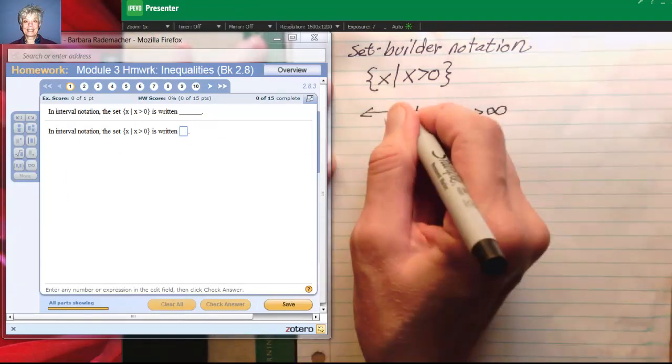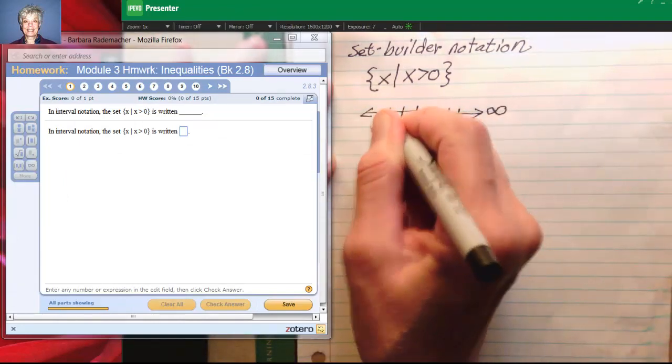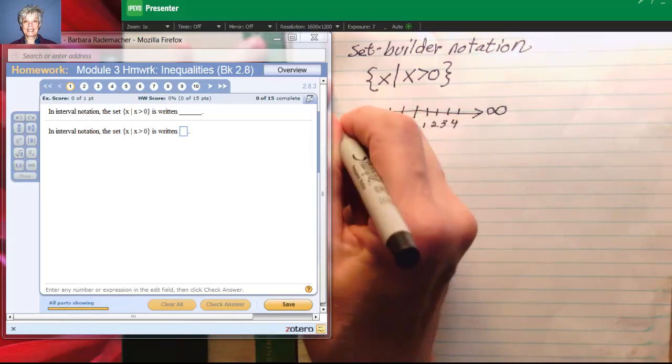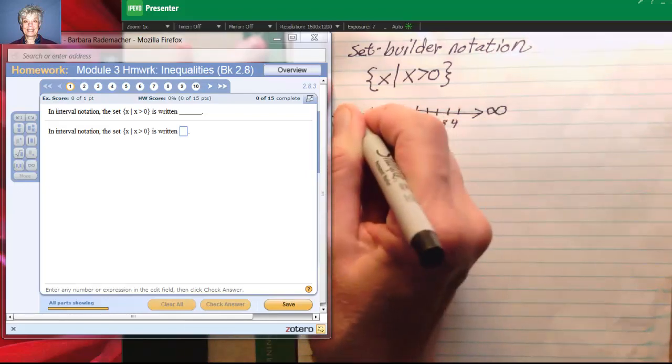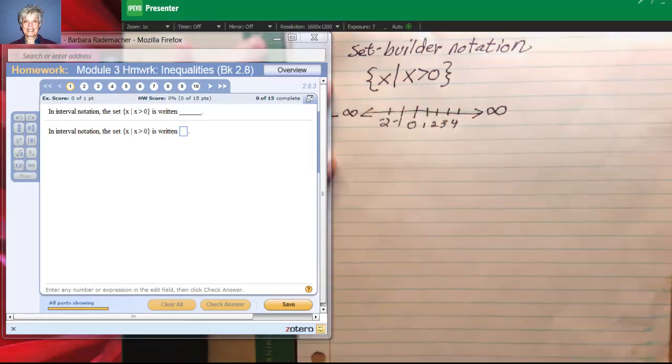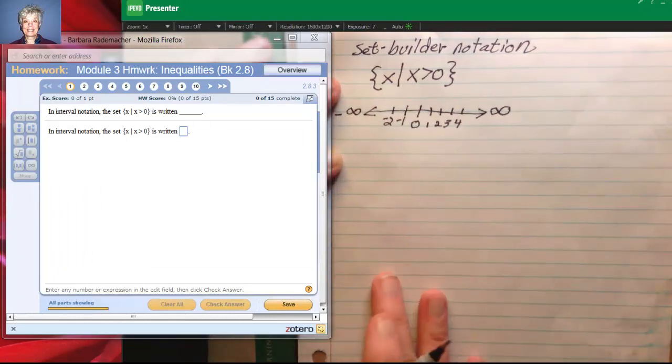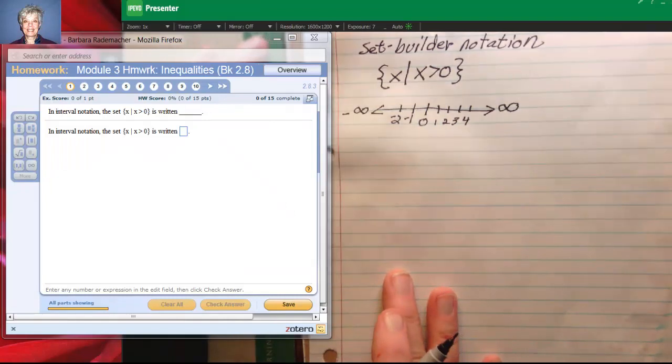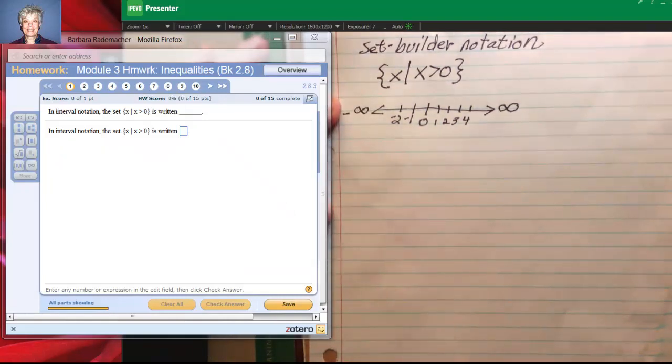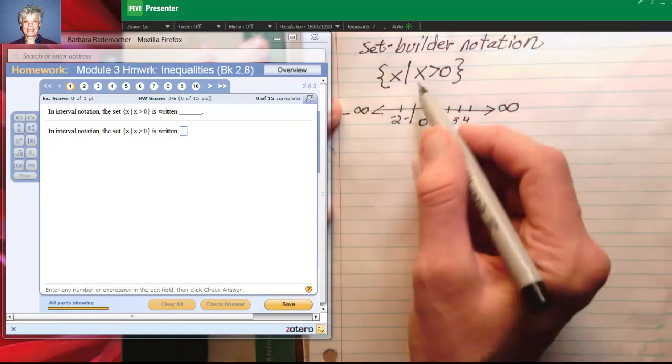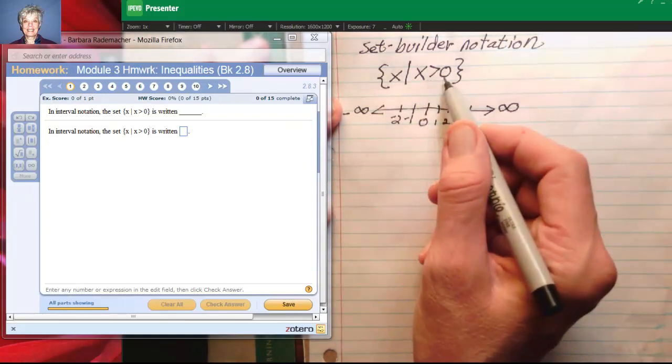Over here you've got the negative numbers going off to the left and our symbol for goes forever to the left is a negative sign and infinity, what we call negative infinity. Now, we're looking for all of the numbers greater than zero.